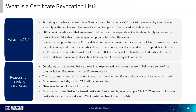According to the National Institute of Standards and Technology, a CRL is a list maintained by a certificate authority of the certificates it has issued and revoked prior to the stated expiration date. CRLs contain certificates that are revoked before the actual expiration. A certificate authority can move certificates to the CRL either irreversibly or temporarily based on the scenario. One important point to note is that CRL, by definition, contains revoked certificates by the CA or the owner that have not yet expired — meaning certificates which have not organically expired as per the predefined timeline. The X.509 standard defines the format of a CRL for a PKI. Each entry will contain the revoked certificate serial number, dates of revocation, and also a time limit in case of a temporary hold on certificates.